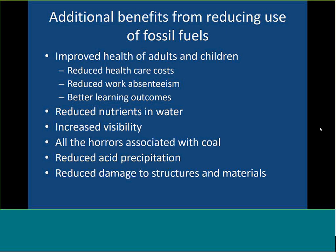Air pollution is also responsible for a lot of the nutrification in our aquatic ecosystems — sulfur from air pollution gets dry-deposited or precipitated into water bodies and causes environmental problems. Reducing fossil fuels also increases visibility, and in the Appalachians we have horrors associated with mountaintop coal mining. Most mercury pollution in the world is a result of burning coal, and we see reduced acid precipitation and reduced damage to structures. So it's a win-win-win situation to move away from fossil fuels.